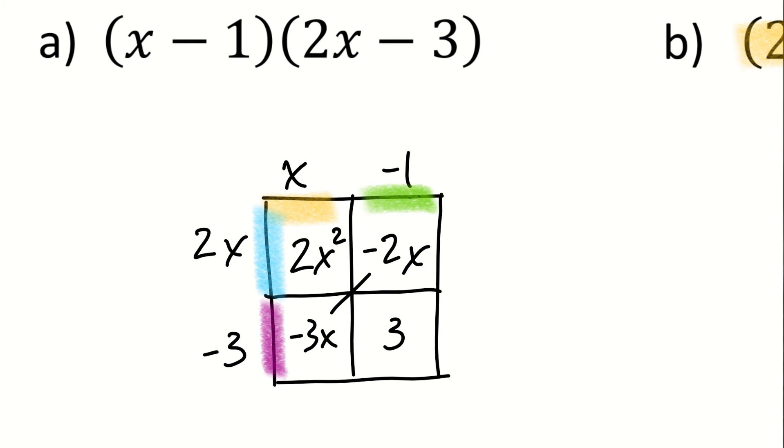So I can see that two of my terms are like terms and I can combine those in my final answer, but I should be writing that this product is equivalent to 2x squared minus 5x plus 3. So x minus 1 times 2x minus 3 is 2x squared minus 5x plus 3. Let's move on to part B.